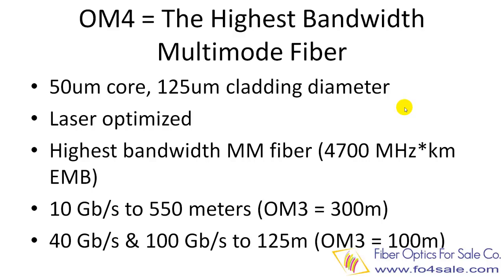Simply put, OM4 fiber is laser optimized in order to work with VCSEL lasers, and it has the highest bandwidth among multimode fibers. OM4 fiber has an EMB bandwidth of 4700 MHz·km, compared to OM3 fiber's 2000 MHz·km EMB. OM4 fibers can support 10 Gbps transmission up to 550 meters, and 40 Gbps and 100 Gbps transmission up to 125 meters.